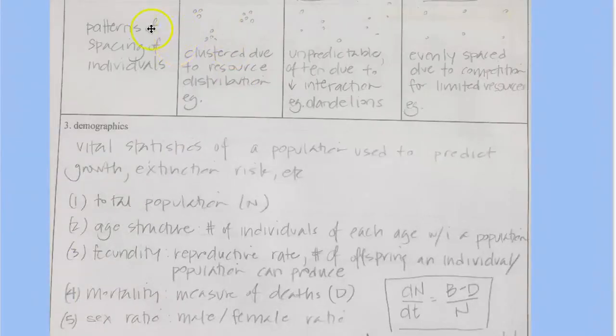So dispersion has to do with the pattern of spacing of individuals. And the spacing can be described in three basic ways. Sometimes populations are clumped in little clumps so that there'll be a group, a species group here, a species group here, a species group here in a given area.